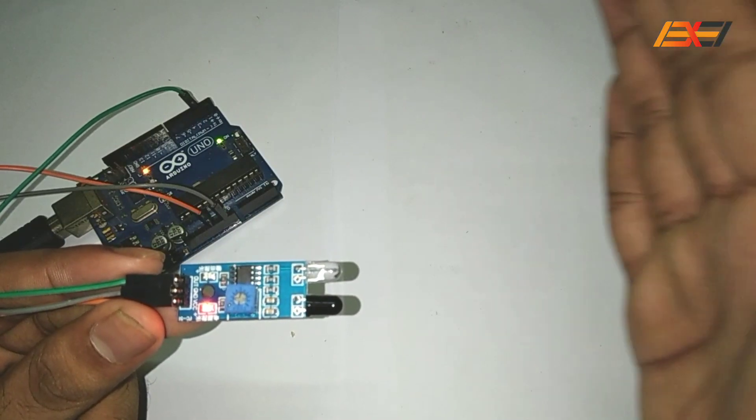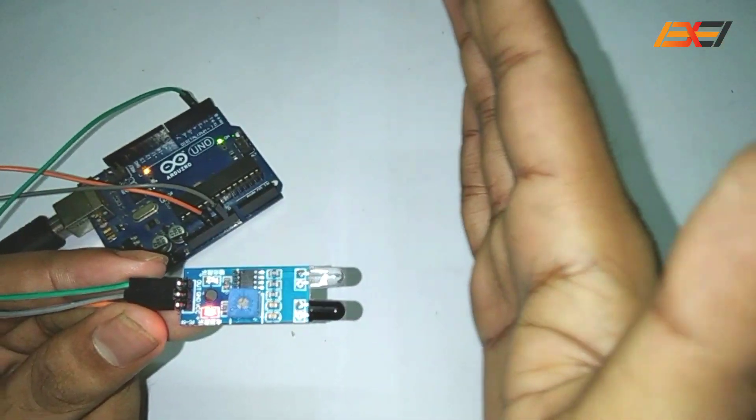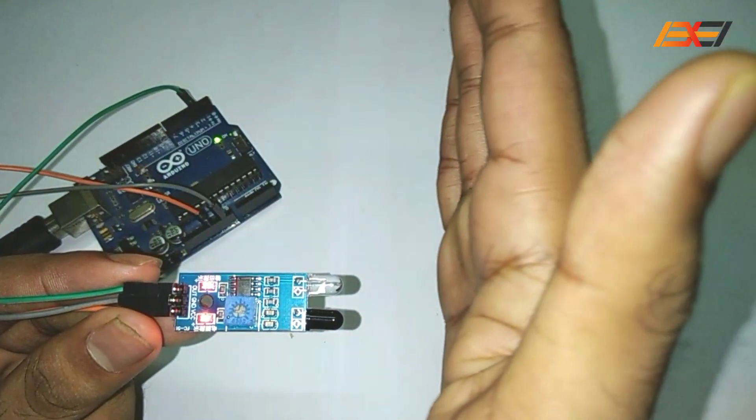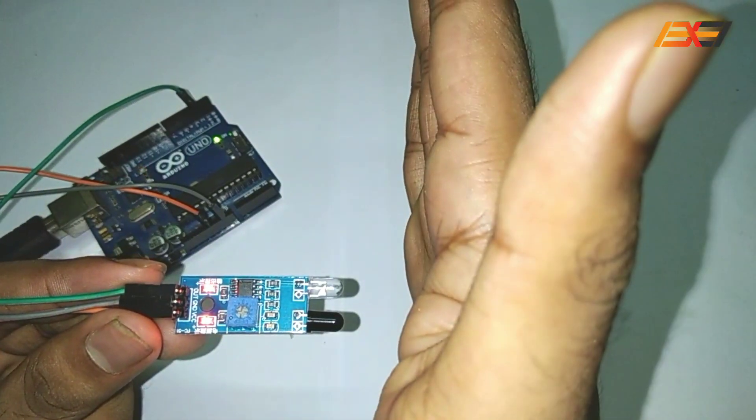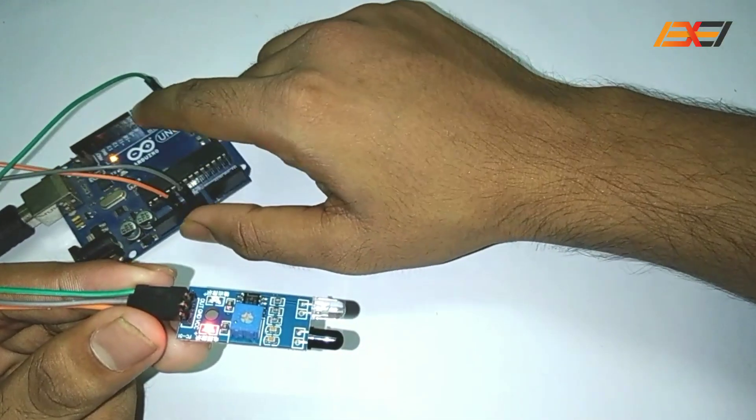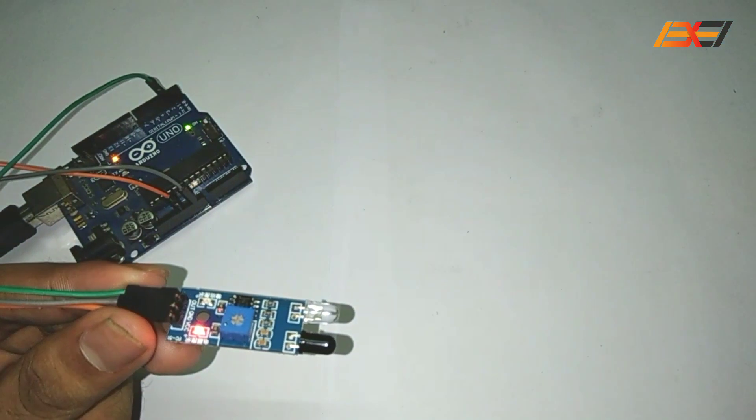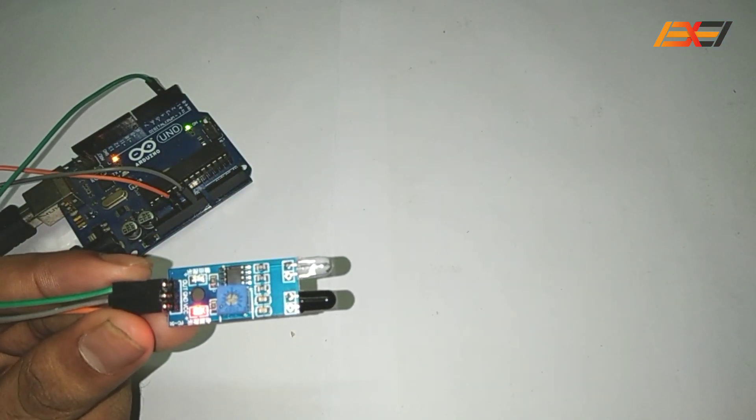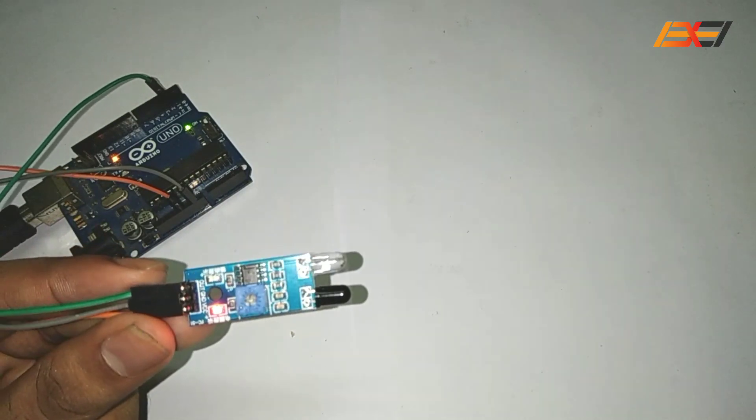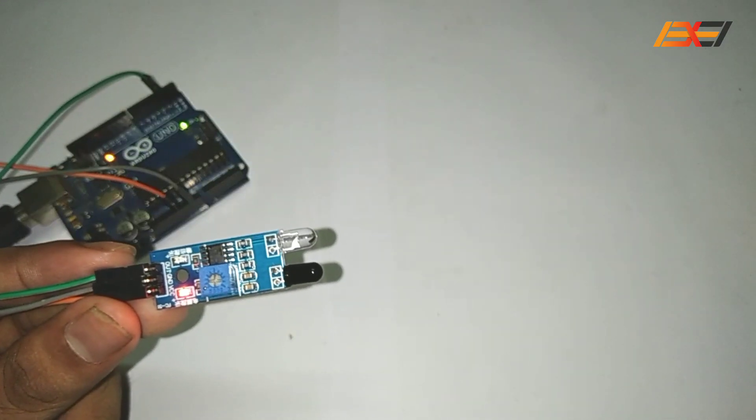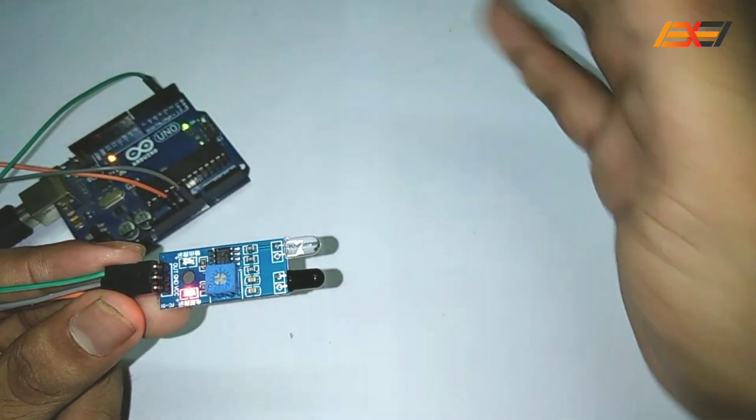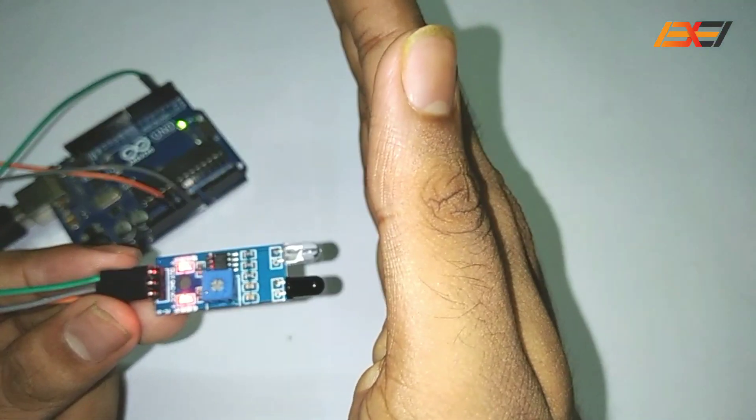If it detects any object then this LED will turn on. You will also notice that the LED connected to pin 13 of this Arduino board is turning on when the IR sensor is not detecting any object. But when it detects the object, the LED connected to pin 13 is turning off.